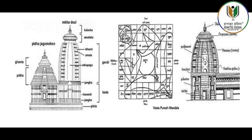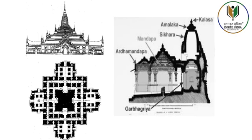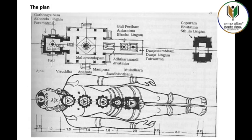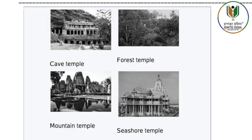Two broad orders of temples in the country are known as Nagara in the north and Dravida in the south. At times, the Vesara style of temples is also found as an independent style, created through the selective mixing of the Nagara and Dravida orders.